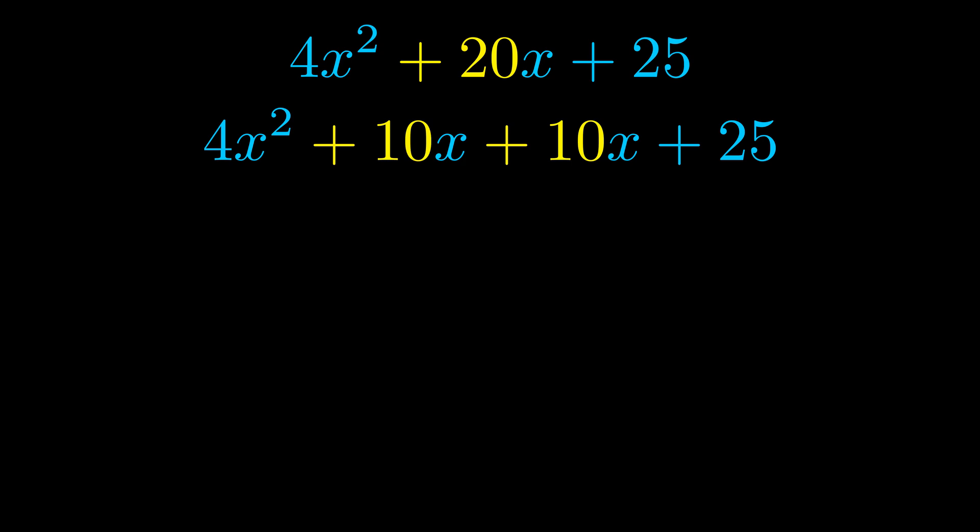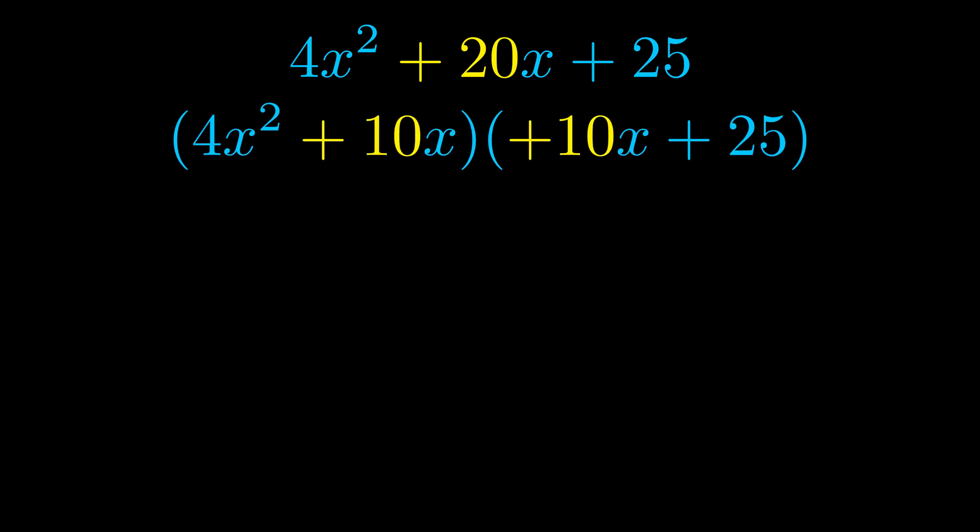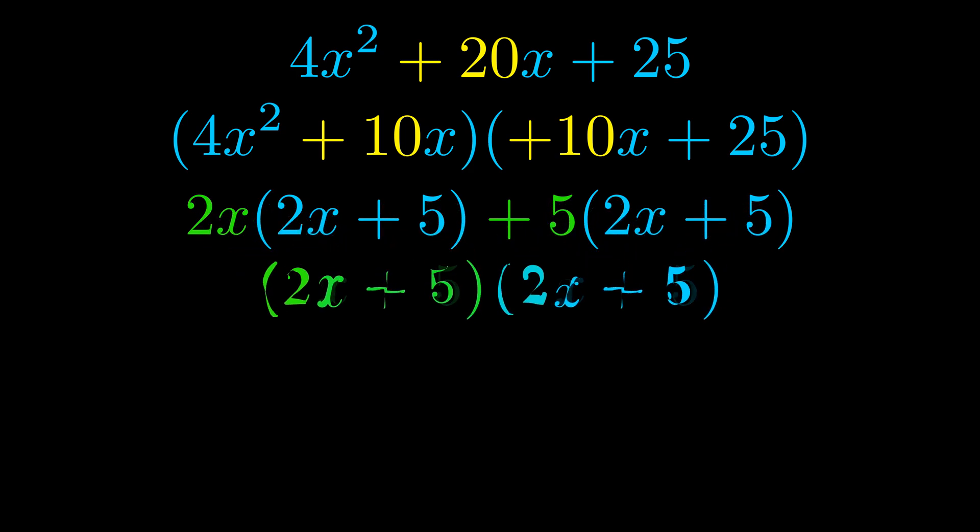Once we've done this we go ahead and put parentheses around the first term and the last term. And we do that so that we can take the greatest common factor out of both terms. We can see the greatest common factor is now outside in green. Notice also how what remains inside of the parentheses is the same in both cases. The blue values are the same.